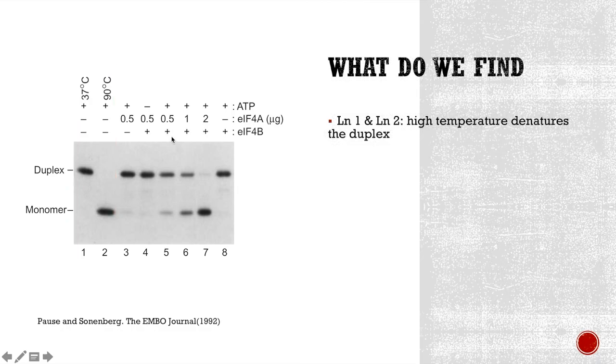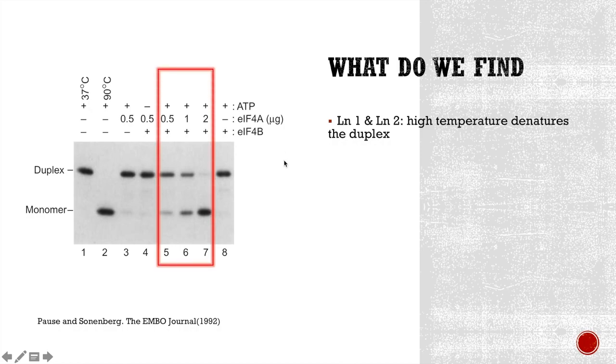Now, all the rest of the experiments were done at 37 degrees Celsius. Let's look at lane 5, 6, and 7. All these three lanes have the same amount of ATP and EIF4B, but different amounts of EIF4A. The gel shows us that, when there is an increasing amount of EIF4A in the mixture, there are more monomers and fewer duplexes. This indicates that this combination, ATP plus EIF4A plus EIF4B, has RNA helicase activity, because they could unwind the duplex and form monomers. And this activity is dependent on the amount of EIF4A.